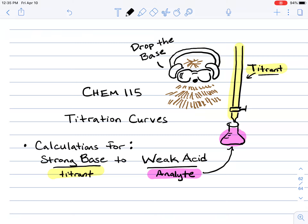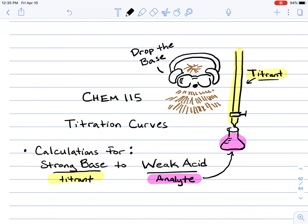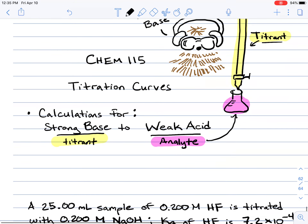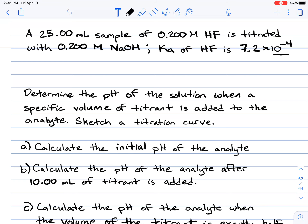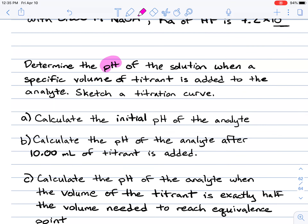Hey guys, welcome back to another lecture video for CHEM 115. In this lecture video, we'll continue our discussion of titration curves. More specifically, we're going to learn how to perform calculations when our titrant is a strong base and our analyte is a weak acid. We'll go through an example and determine the pH of the solution at various volumes of titrant added, then create a titration curve.